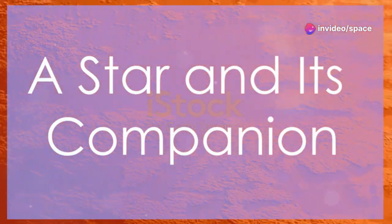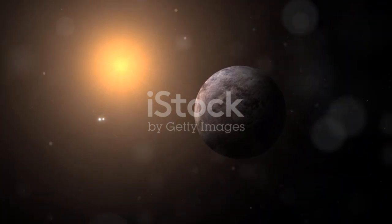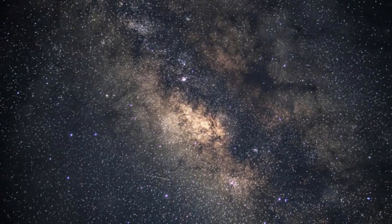To understand Proxima b we must first understand its star. Proxima Centauri is a red dwarf star, much smaller and cooler than our own sun. It's a common type of star in the Milky Way galaxy, but their faintness makes them difficult to see with the naked eye.